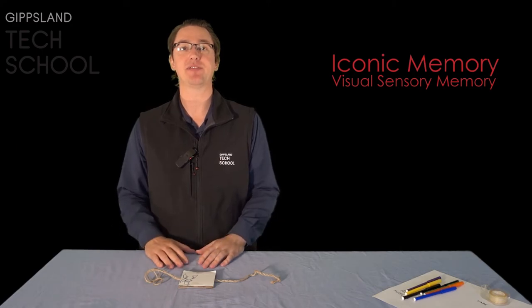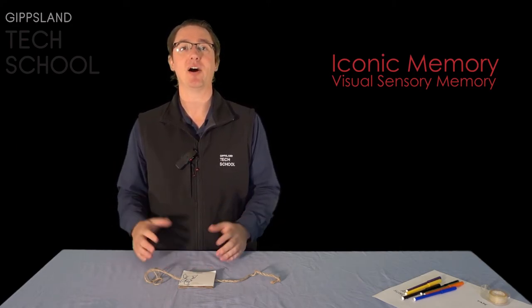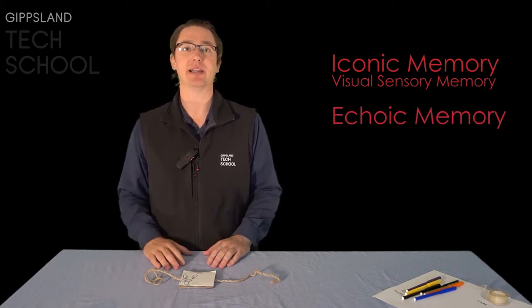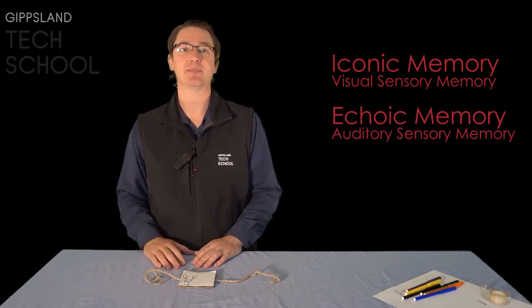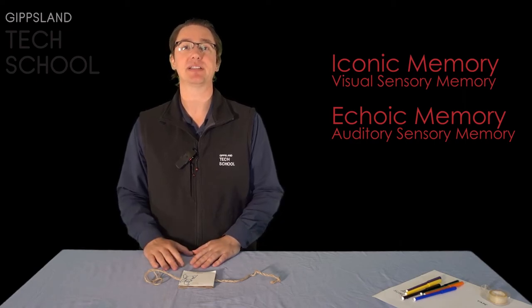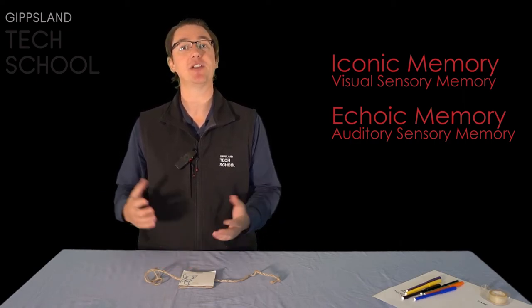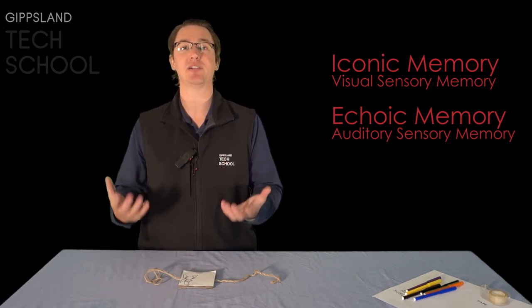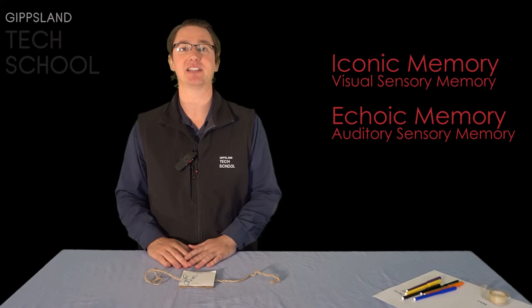Another example of this is with your ears. When you hear something, your brain holds onto it for up to a few seconds. This is called echoic memory or auditory sensory memory. An example that you may have experienced is when you're having a conversation with someone and you think you've missed something that they've said. You ask them to repeat themselves, but before they do, you remember what it was and the conversation continues.